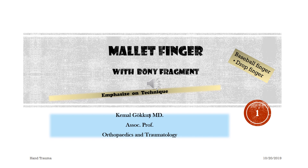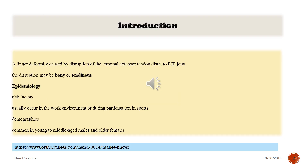Mallet finger — also known as baseball finger or drop finger — is a finger deformity caused by a disruption of the terminal extensor tendon distal to the DIP joint. This disruption may be bony or tendinous.